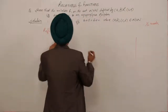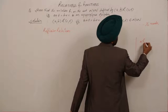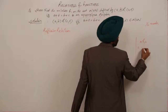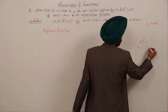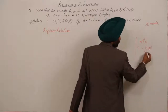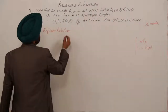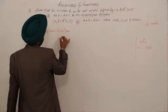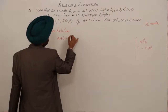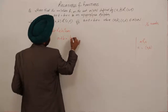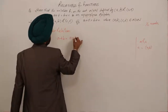For the reflexive relation, we have (a,b) R (a,b). So the condition becomes: a+b = a+b. This is true, so a+b = a+b, which implies (a,b) is in relation with (a,b).